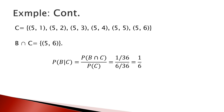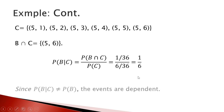The probability of B given C equals the probability of B intersection C over the probability of C. The probability of B intersection C equals 1 over 36, and the probability of C equals 6 over 36. When you simplify, you get 1 over 6. Since the probability of B given C is not equal to the probability of B — which we calculated as 1 over 12 — these two numbers are not equal, so events B and C are dependent.